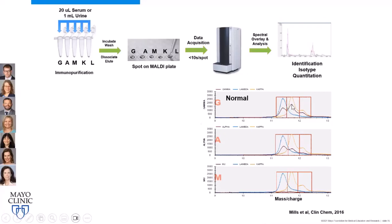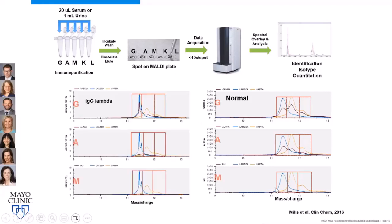You can observe the kappa-to-lambda ratio: for IgG it's about 1 to 1.5; for IgA it's 1 to 1; for IgM it's lower abundance with a high fraction of heavy kappas. When a patient overexpresses an immunoglobulin, you see a wider distribution in the lambda pull-down, then confirm which heavy chain it came from. In this case, the peak appeared in IgG but not IgA or IgM — so this is an IgG lambda M protein. That's Mass Fix.